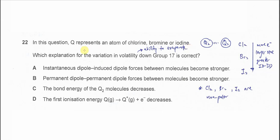Question 22. Which explanation for the variation in volatility down group 17 is correct?